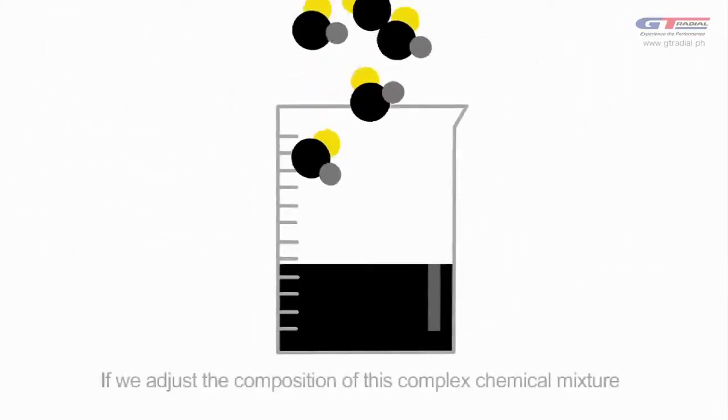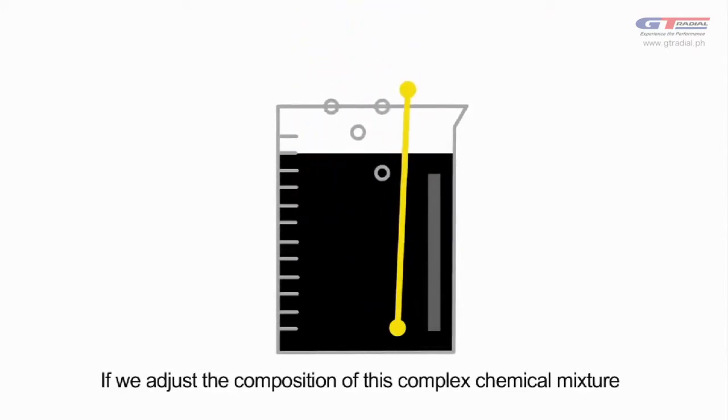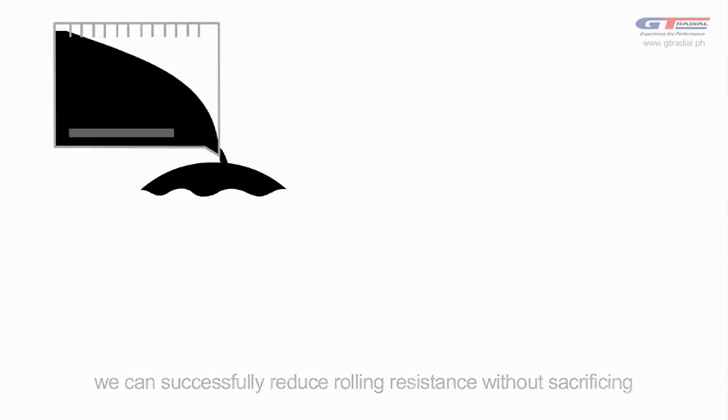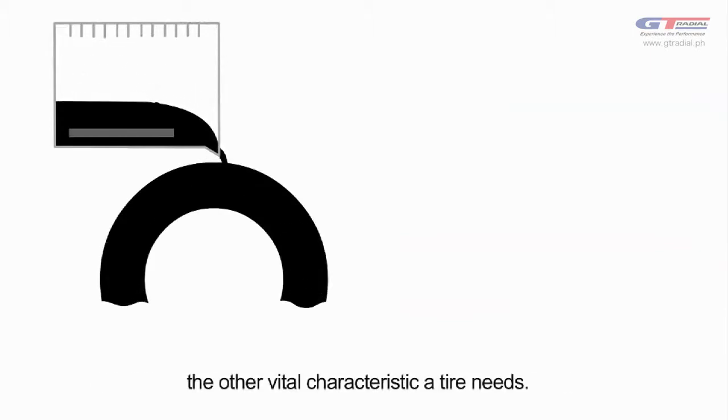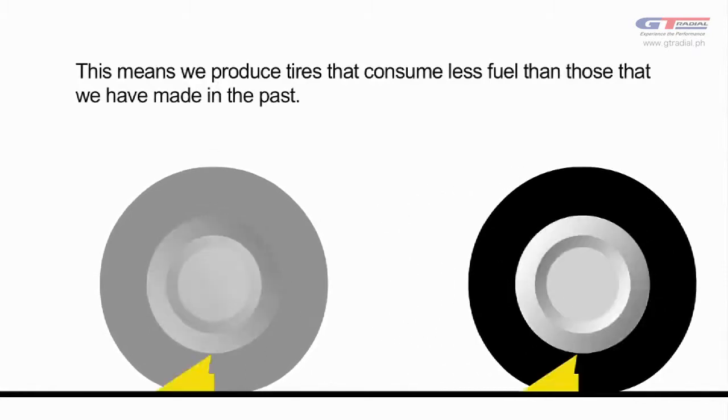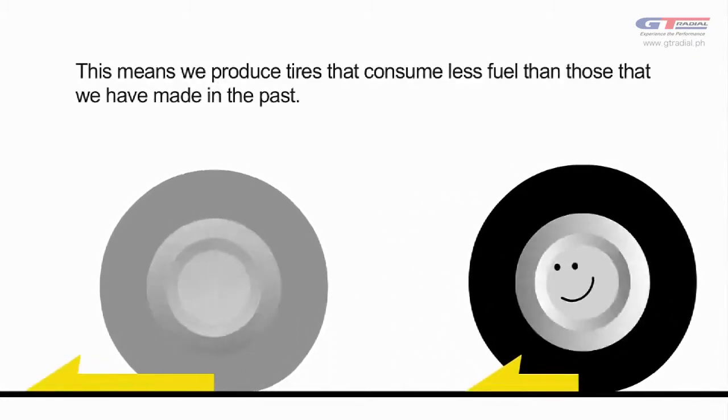If we adjust the composition of this complex chemical mixture, we can successfully reduce rolling resistance without sacrificing the other vital characteristics a tire needs. This means we produce tires that consume less fuel than those that we have made in the past.